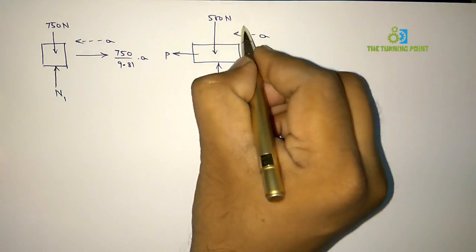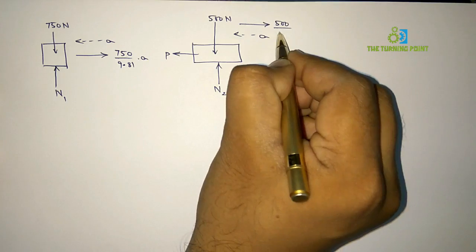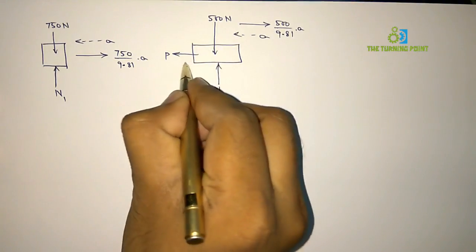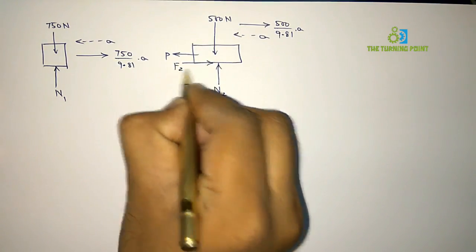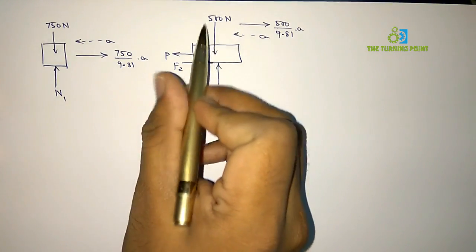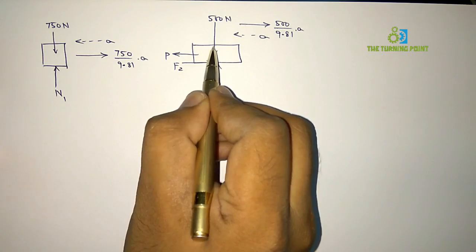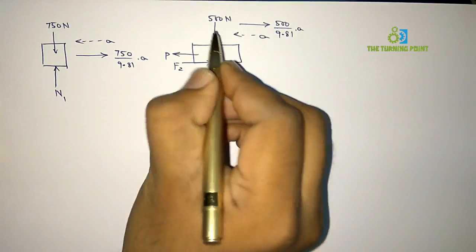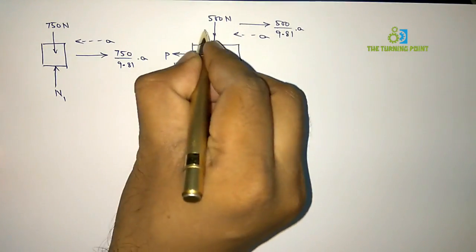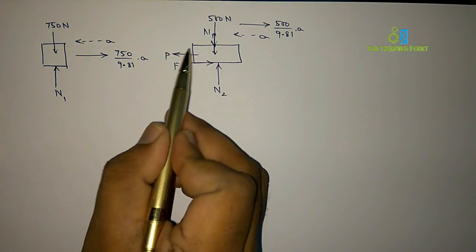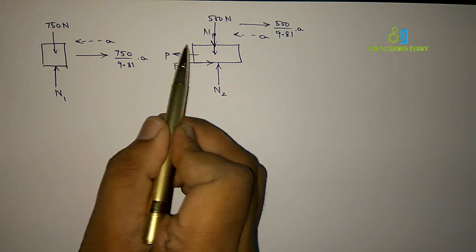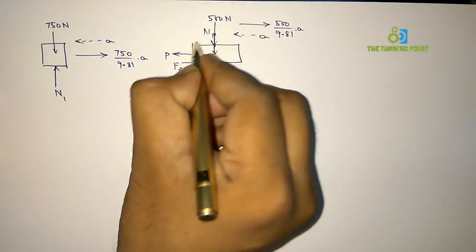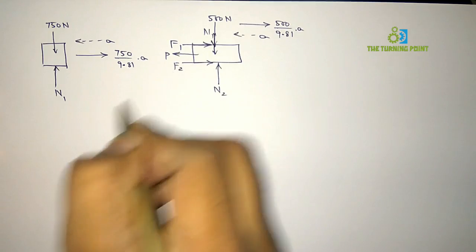The acceleration will be in that direction. In the opposite direction, represent 500/G × A as the inertia force. When the cart is moving in this direction, it will have frictional force in the opposite direction, F2. The cart also has contact with the 750N crate, so it is not able to move upward. In the opposite direction — downward — you represent normal reaction N1. Due to contact with the 750N block's lower surface, there will also be a frictional force F1 in the opposite direction.